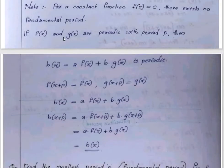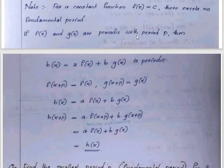If f of x and g of x are both periodic with the same period p, then their linear combination — that is, a times f of x plus b times g of x, denoted h of x — is also periodic with the same period p.